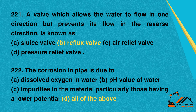Question 221: A valve which allows water to flow in one direction but prevents its flow in the reverse direction is known as. A. Sluice valve. B. Reflux valve. C. Air relief valve. D. Pressure relief valve. Correct option: B. Reflux valve.